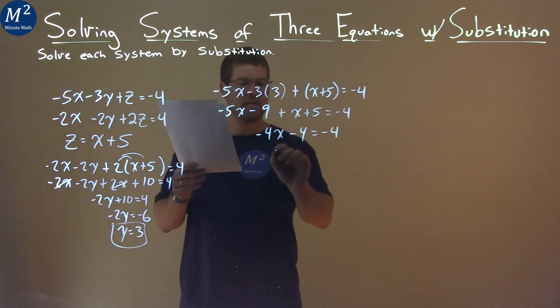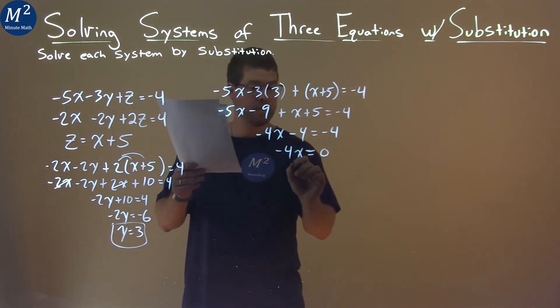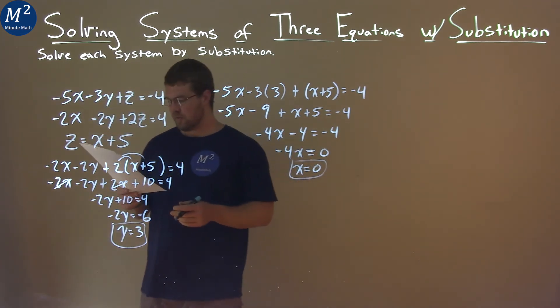Add a 4 to both sides, and negative 4x equals 0. Divide both sides by negative 4, and x equals 0. Well, that's nice. We have x equals 0, and y equals 3.